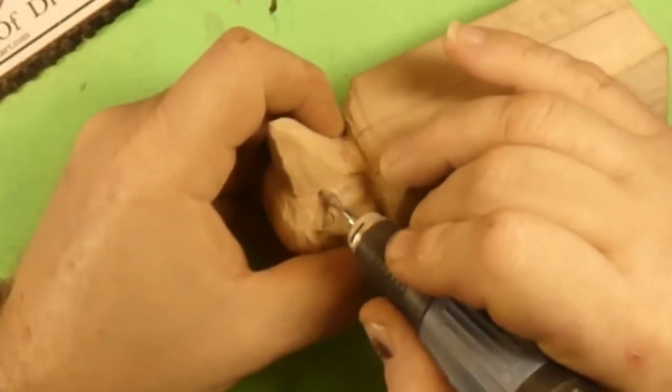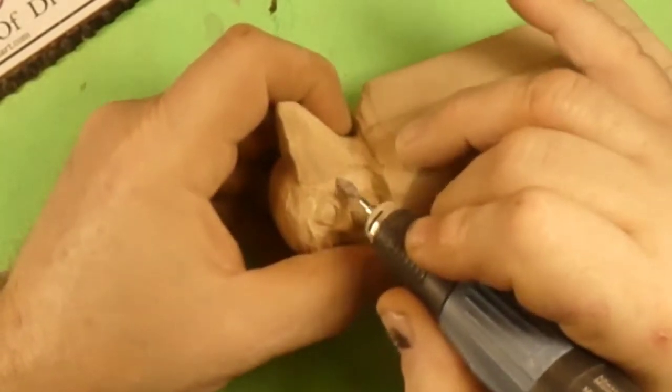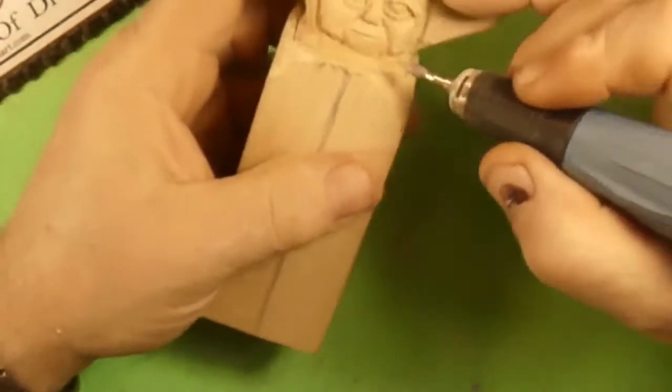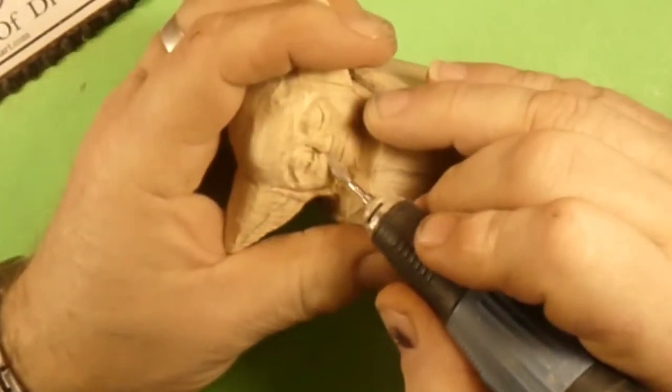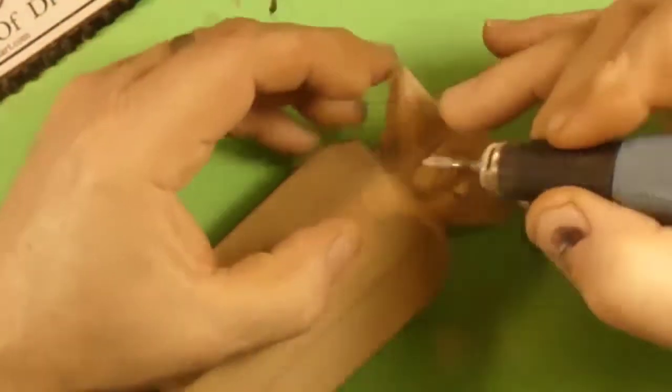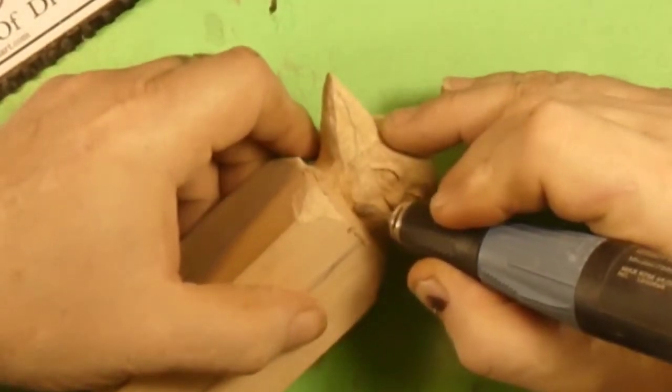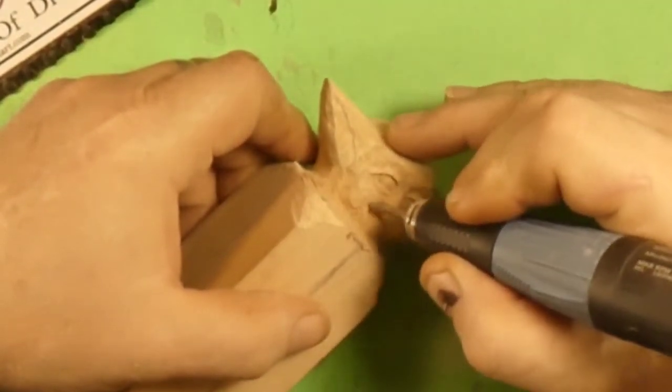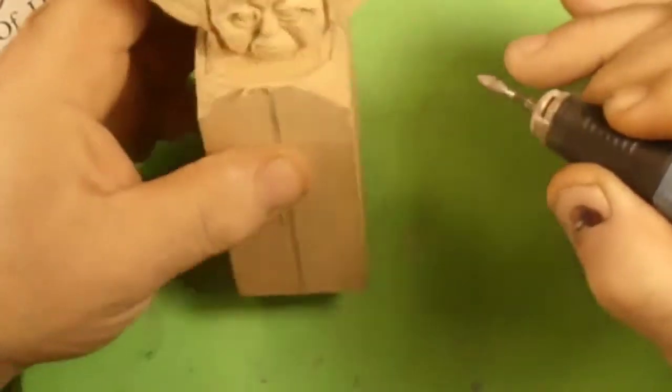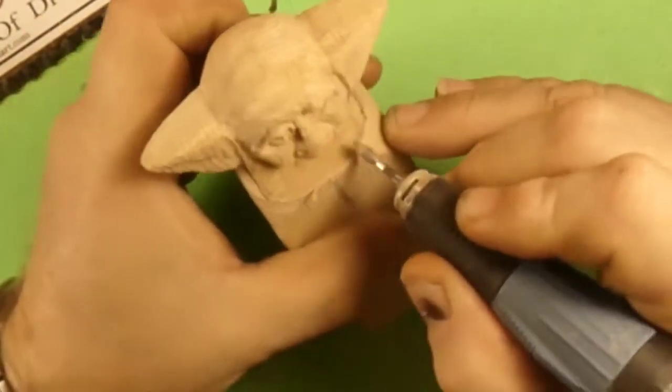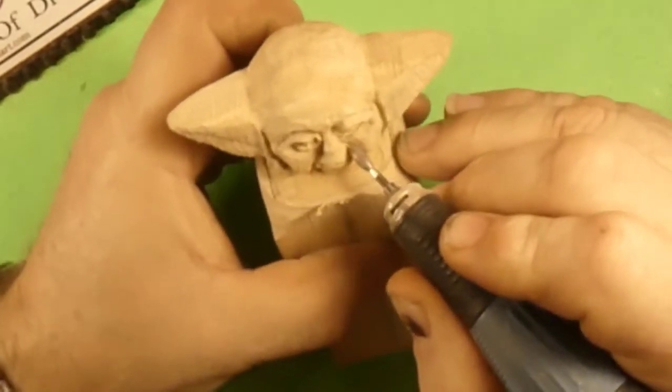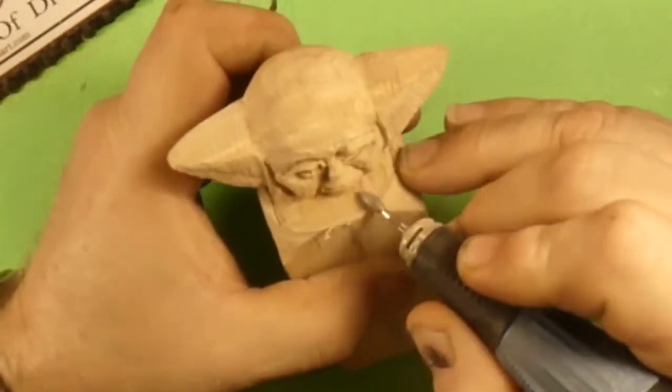I think the knife just might tear it up a little too much because of going across the grain there when you're using the knife. So I'm just going to use these little ruby burrs. If you want a really nice finish so that when you're done you're done—you don't have to go back and sand it and all that stuff—ruby burrs work great.